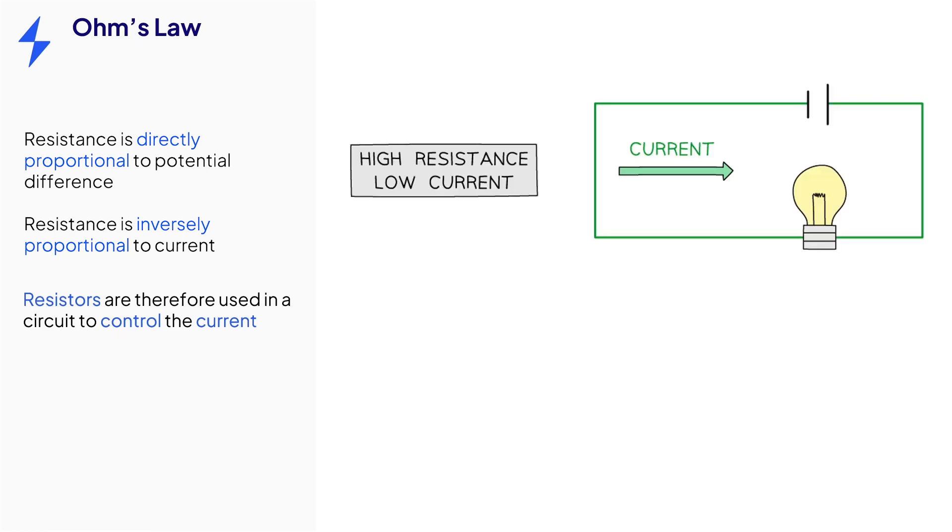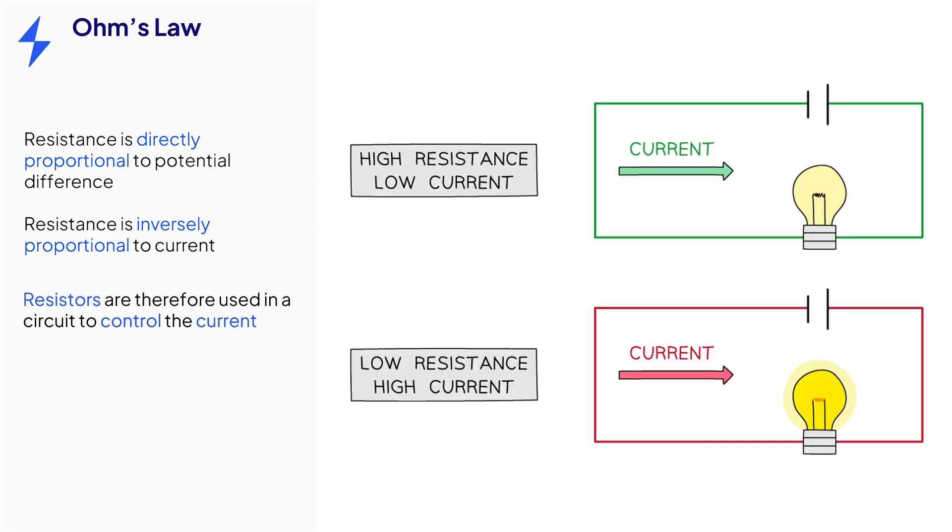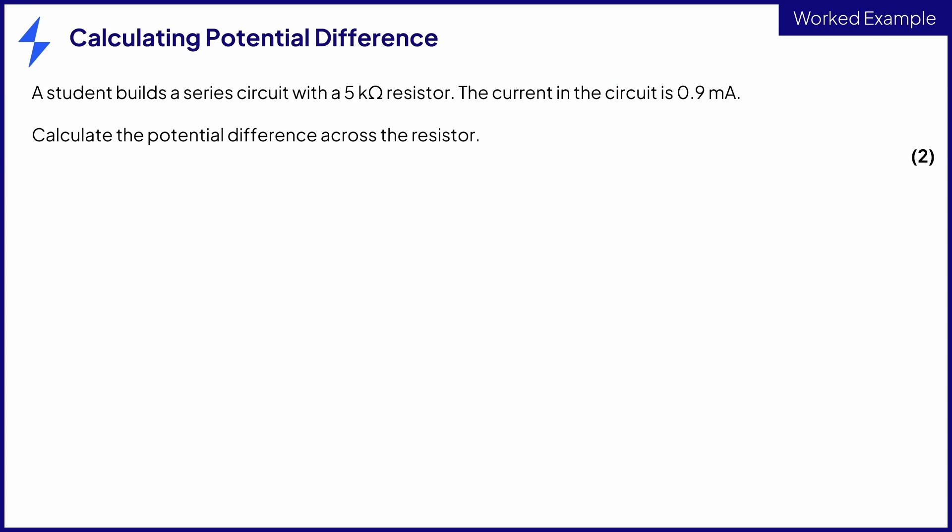A higher resistance will give a lower current, and a lower resistance will give a higher current. Let's take a look at an example exam question. A student builds a series circuit with a 5 kilo-ohm resistor. The current in the circuit is 0.9 milliamps. Calculate the potential difference across the resistor for two marks.